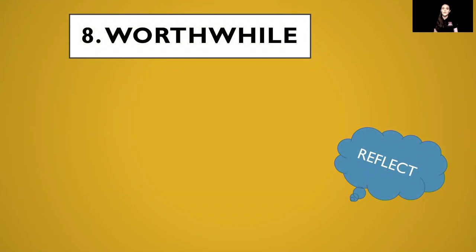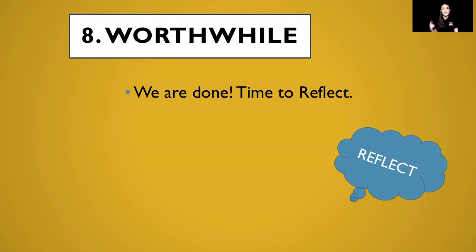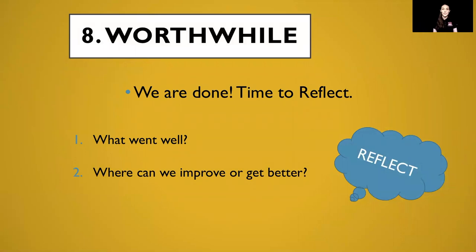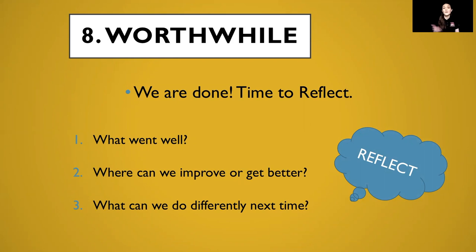Our eighth and last W focuses on 'worthwhile.' At this point we've completed the assembly and now we take time to reflect on our process. The first question is: what went well? Maybe we were great on our timelines and all tasks were completed by the due date. The second question is: where can we improve? For example, instead of doing announcements only one week prior, maybe we should start two weeks out to get the word out sooner. The last question is: what can we do differently next time? This completes the eight W's to project planning, a resource that can be used at any site for any type of project.